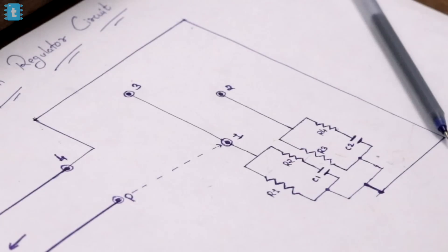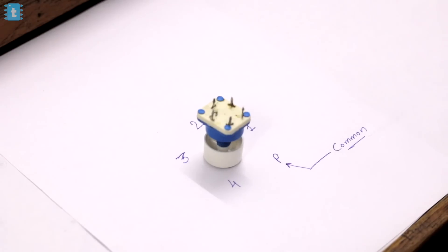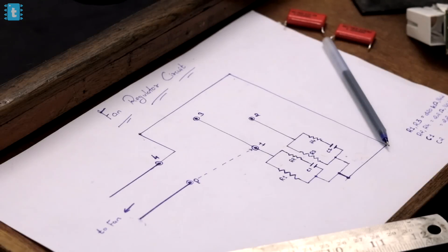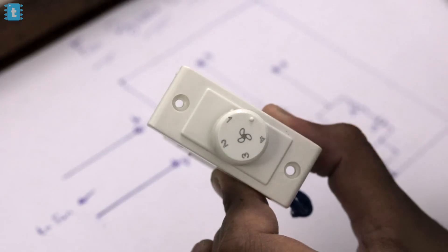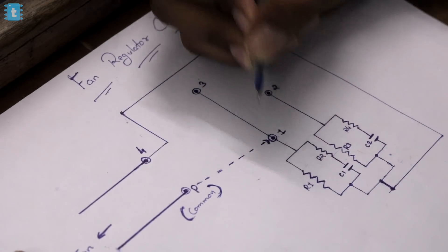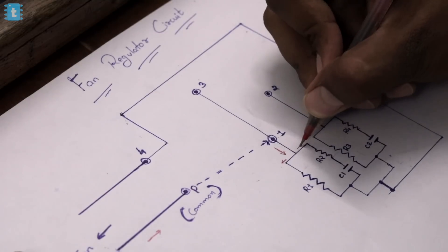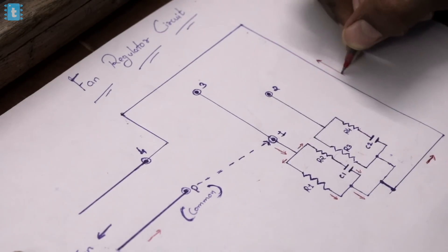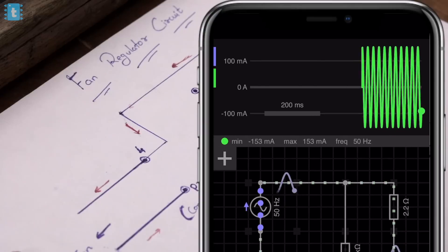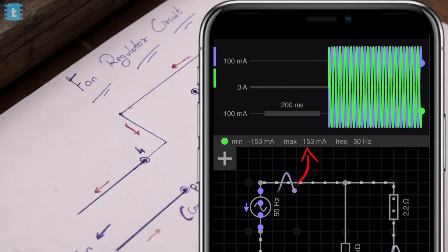As you can see, we have two RC circuits which limit the current flowing through them, and the values of all the components are something like this. There is a knob with five terminals — one, two, three, four, and a common terminal. For the lowest speed, the common terminal gets connected with pin one, so the current flows through that path, resulting in the slowest speed. When I put this circuit into a simulation software, I found that at the lowest speed the current flowing is around 153 milliamperes.